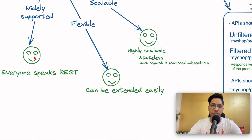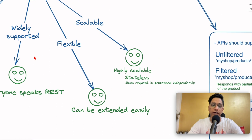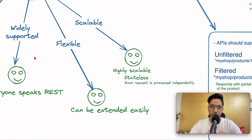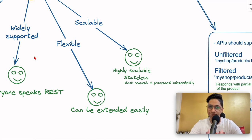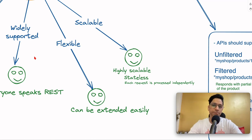REST is flexible because it can be extended easily. You don't have to go through a lot of complexity — you can add changes, you can add new features by just extending the existing API, which makes a lot of sense because you have to add a lot of features to your product, and that's how products evolve.